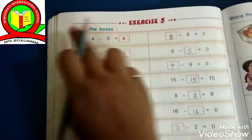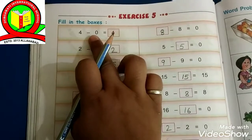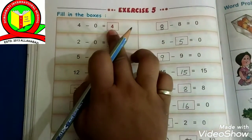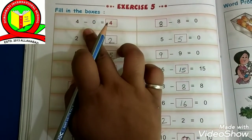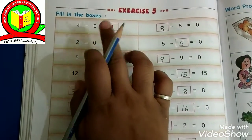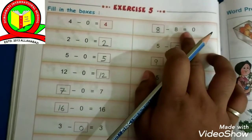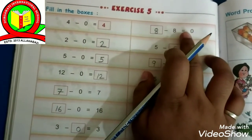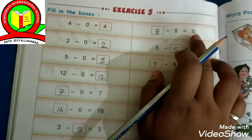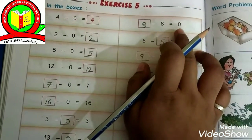Let's start the exercise. Fill in the boxes. 4 minus 0 is equals to 4 because when 0 is subtracted from a number, the number remains the same. 8 minus 8 is equals to 0 because when a number is subtracted from itself, the result is 0.